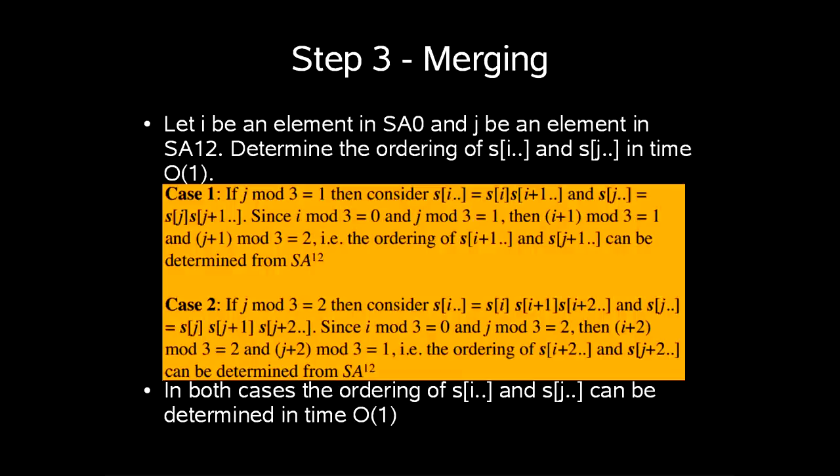The second case is if J mod 3 is 2 then we consider SI equal to SI SI plus 1 SI plus 2 and SJ equal to SJ SJ plus 1 SJ plus 2. Since i mod 3 is 0 and J mod 3 is 2 then I plus 2 mod 3 is 2 and J plus 2 mod 3 is 1. So the ordering of SI plus 2 and SJ plus 2 can be determined from SA1-2. In both cases the ordering of SI and SJ can be determined in constant time by just inspecting a constant number of symbols and maybe SA1-2.